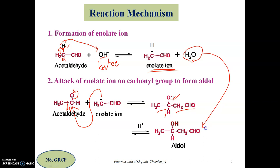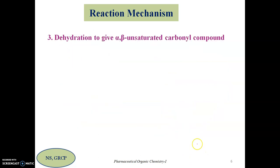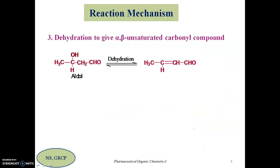In the first step, water was formed as a byproduct. The O minus from the anion takes up a proton from water, converting it to give the corresponding aldol — a beta hydroxy aldehyde. The carbon adjacent to the functional group is the alpha carbon, and the next carbon is the beta carbon.